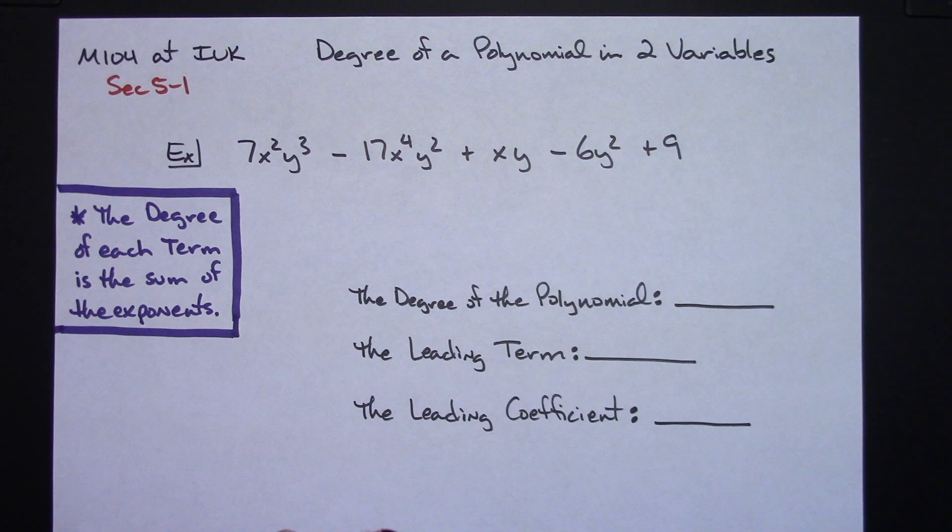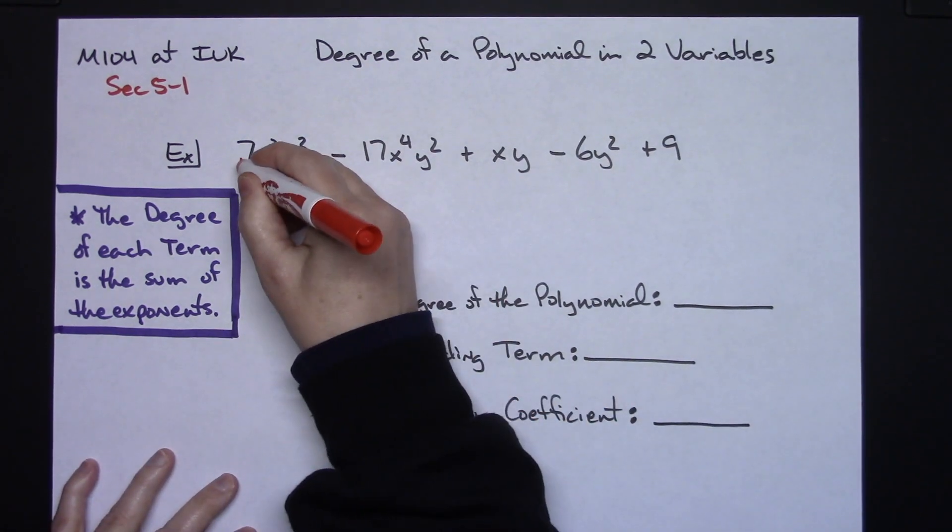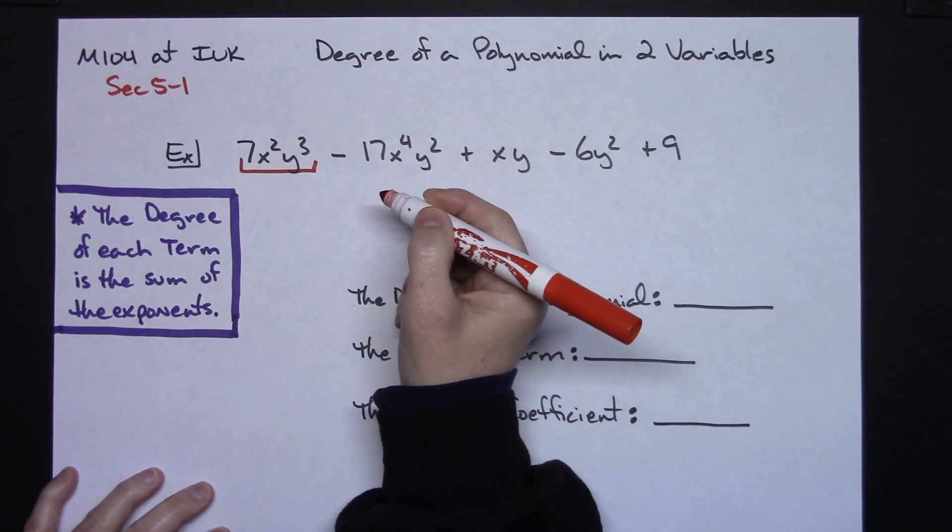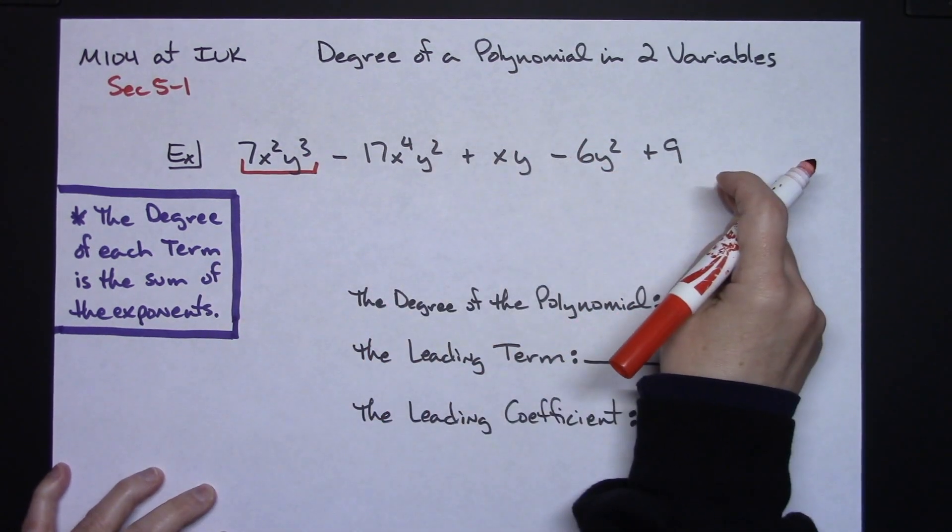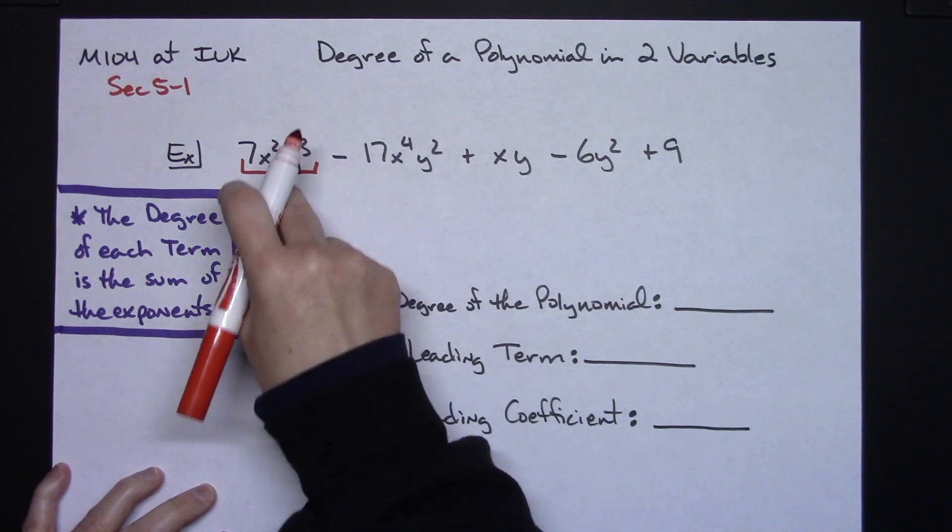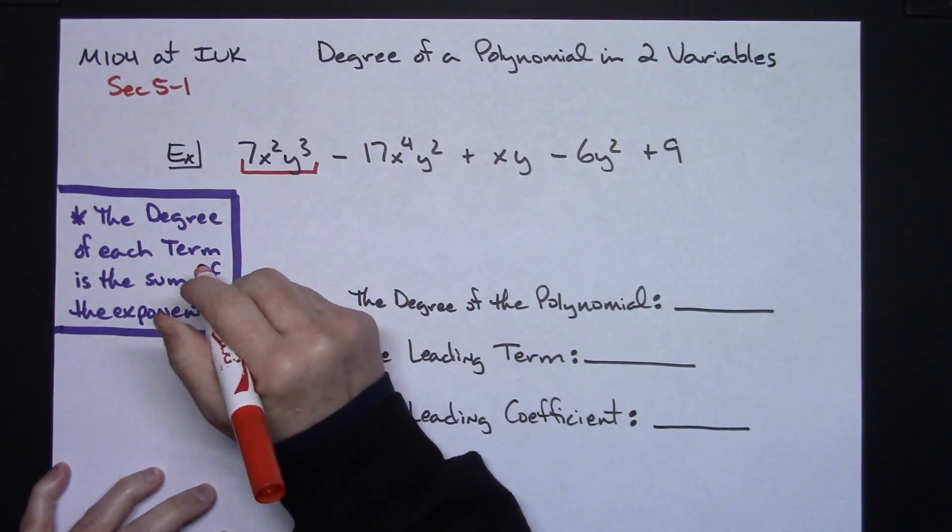So let's take a look at doing each individual term first. So right here for that first term, terms remember are separated by plus or minus signs. So I have one, two, three, four, five. I've got five terms in this polynomial.